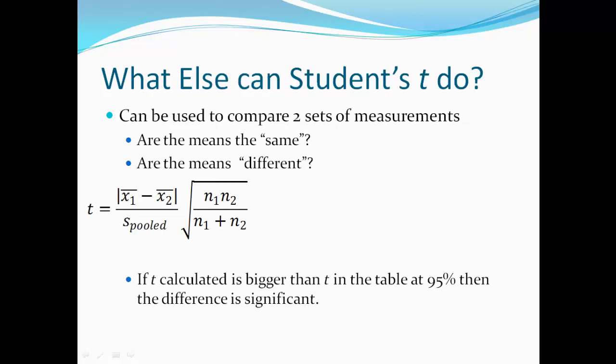What else can the student t-test do? Well, it can be used to compare two sets of measurements. In other words, it could answer whether or not the averages from two different sets of sample data is the same or if they're different. And that is the equation that you would use if you wanted to answer something like that. It says t is equal to the average of the first set minus the average of the second set absolute value. The reason they put the absolute value is that that number is always positive. Divided by s pooled, which is a standard deviation pooled, times the square root of the number of measurements in the first set times the number of measurements in the second set divided by the number of measurements in the first set plus the number of measurements in the second set.